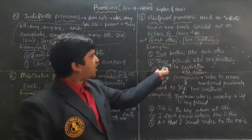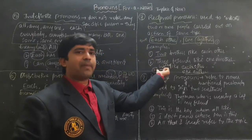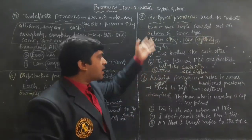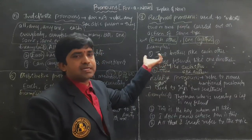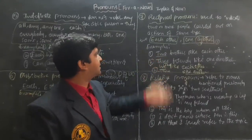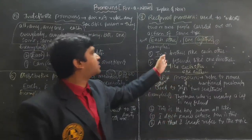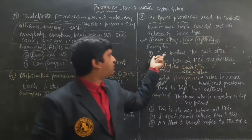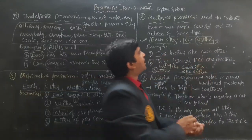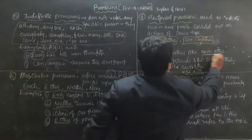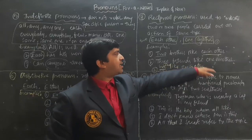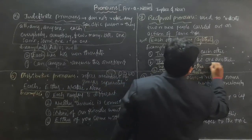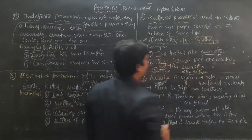This is somewhat confusing, but if you learn it well, you can easily use it in your sentences. The clearest examples: 'Two brothers like each other' — mentioning two, so we use 'each other.' 'Three friends like one another' — mentioning three, so we use 'one another.'